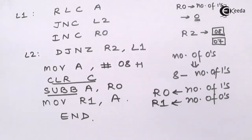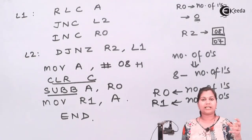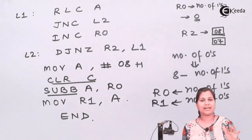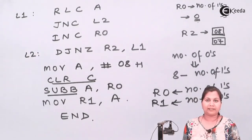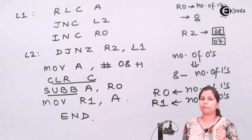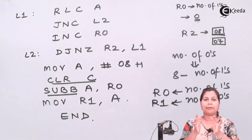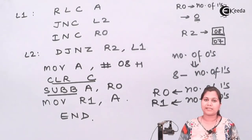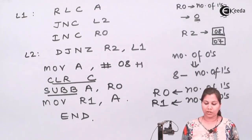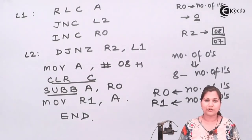The concept used in this program to count the number of 1s and 0s is: load the number into the accumulator, rotate the accumulator with carry so every bit shifts into the carry flag, and check whether the carry flag is set or not. If set, that bit is 1; if not set, that bit is 0. Setting and resetting of the carry flag helps us count the number of 1s and 0s. I hope this program is now clear to you. Thank you.